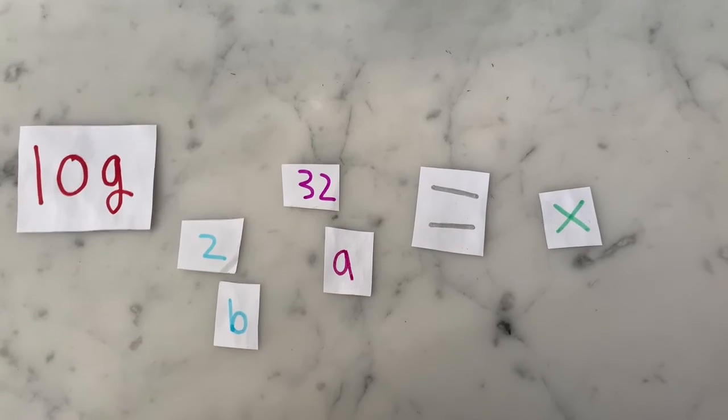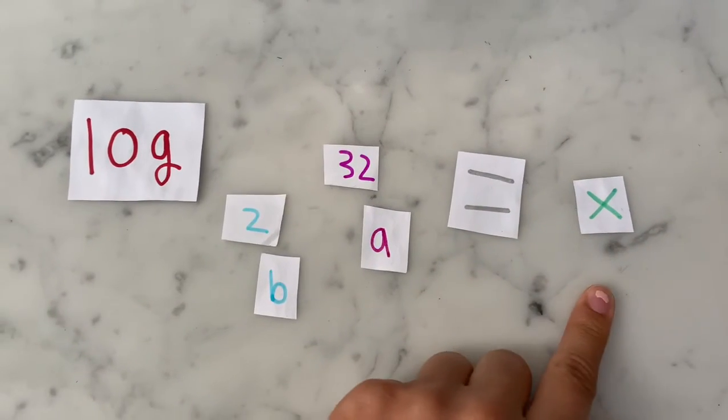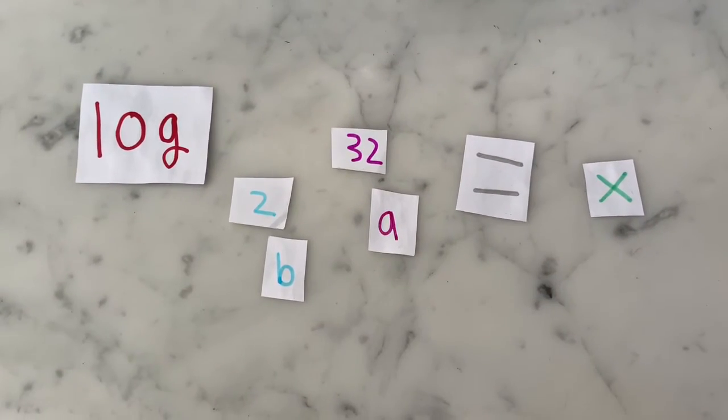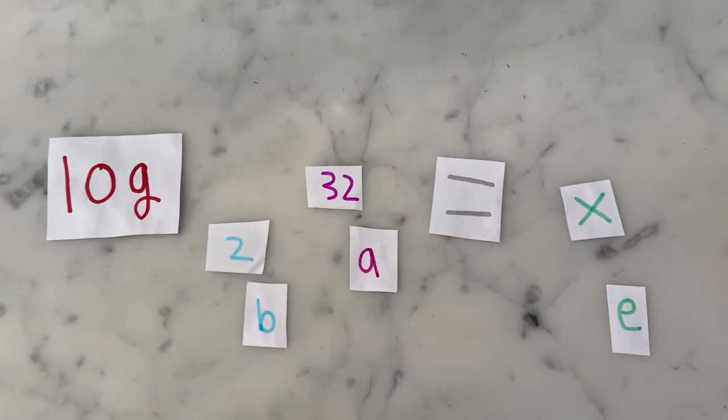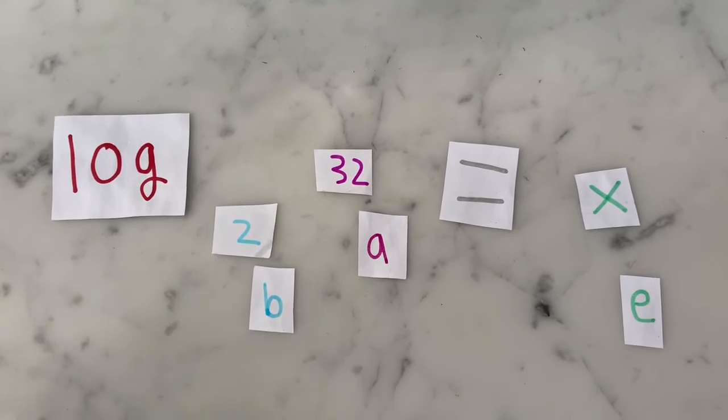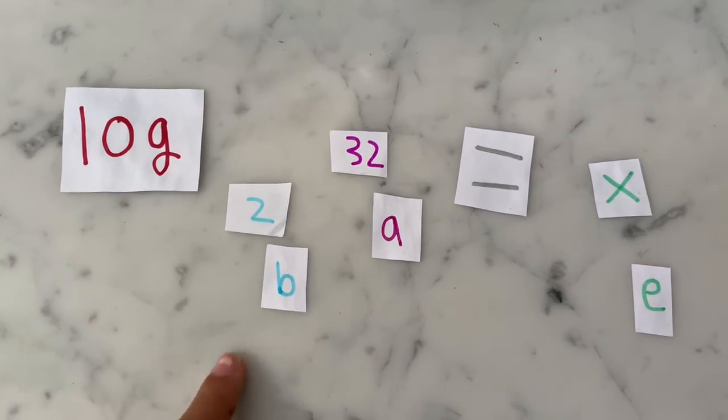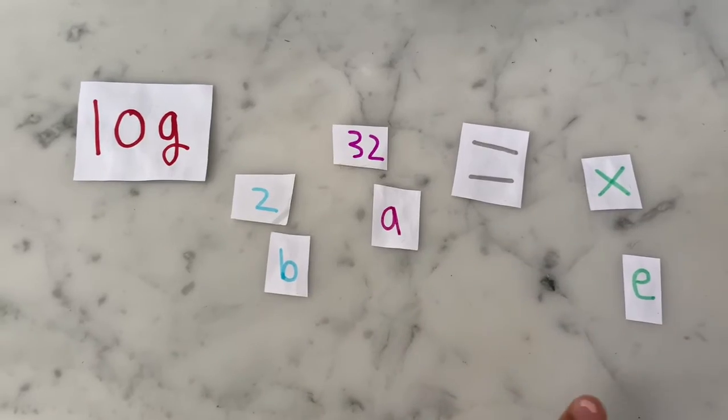And the exponent, which is this, because in the rearrangement this will be the exponent, will have a variable of e. So you can remember how to order this as log bae.